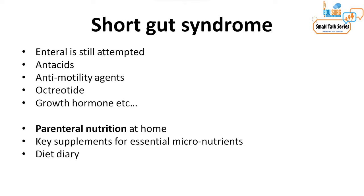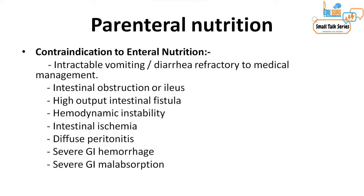However, at 78 years old with such extensive surgery, this patient required parenteral nutrition and will likely need it long-term, even at home. When giving parenteral nutrition, supplements for essential micronutrients must also be given, and maintaining a calorie chart or diet diary is critical. Parenteral nutrition is indicated only when enteral nutrition is contraindicated or cannot fulfill the patient's needs — such as intractable vomiting or diarrhea, intestinal obstruction or ileus, high-output intestinal fistula, or hemodynamic instability.